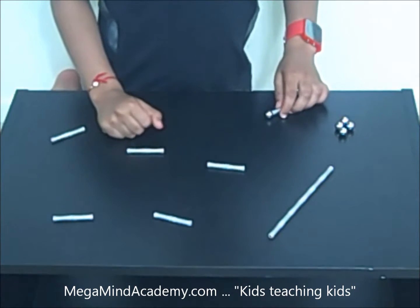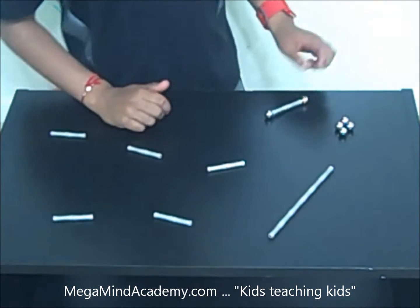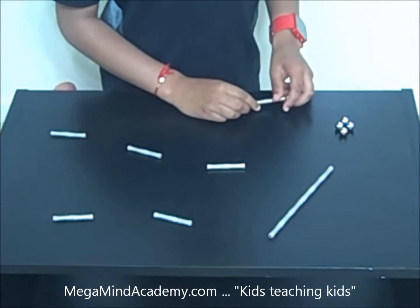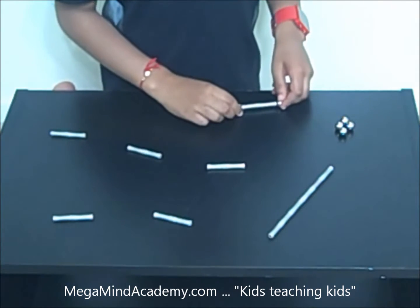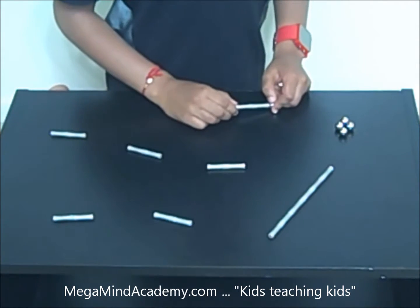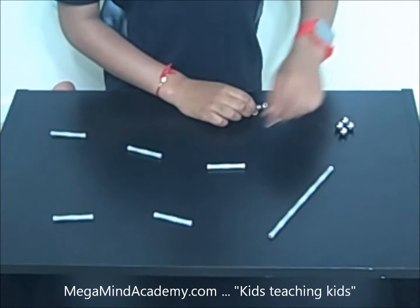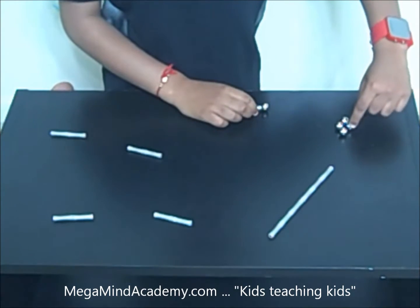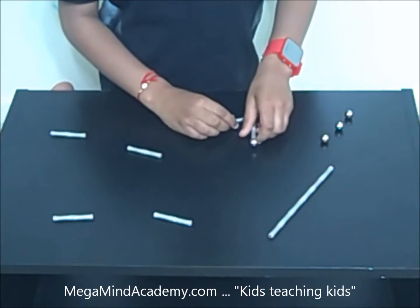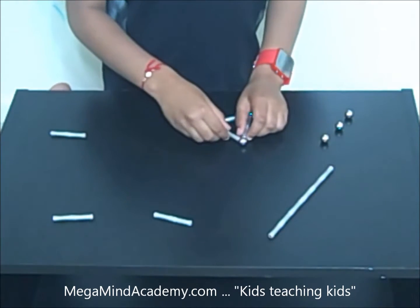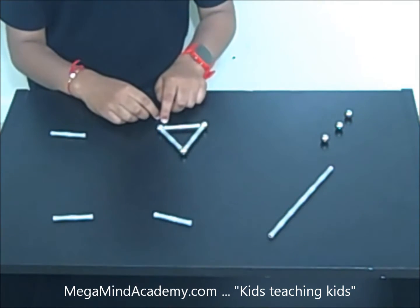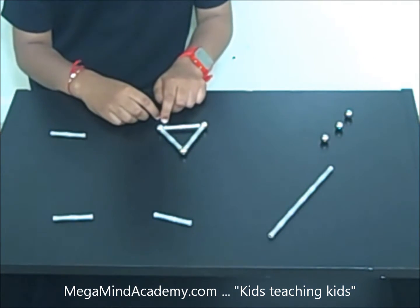Here we go. As I was saying before, a triangular prism has two identical ends, so let's make one end. This is the end. Now let's make the rest of the faces.